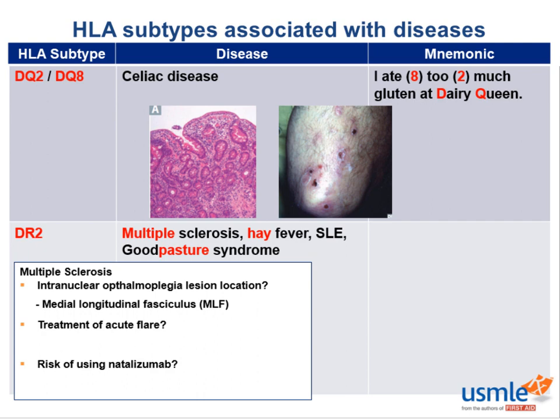Multiple sclerosis is also high yield in pharmacology. Acute flares are treated with IV steroids. Refractory multiple sclerosis can be treated with natalizumab, which targets alpha-4 integrin and affects white blood cell adhesion. However, the major risk with natalizumab is an increased risk of PML — progressive multifocal leukoencephalopathy — in patients with the JC virus. This is how a neuro question becomes anatomy, pathology, immunology, microbiology, and pharmacology combined.